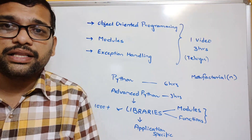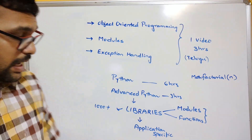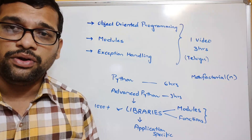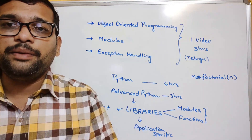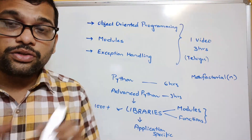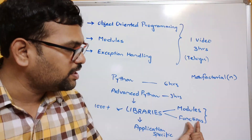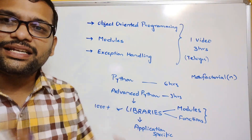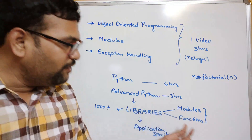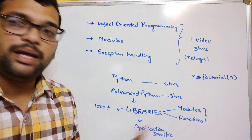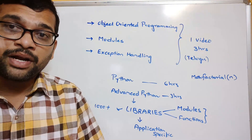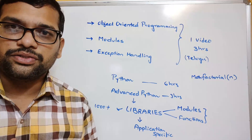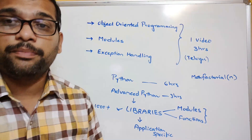We don't need to learn all libraries — that is not possible. So, application-specific, based on what type of application you are building, you learn the related libraries. In those libraries, functions and modules are available. Using them we can develop our applications easily and reduce our lines of code significantly.